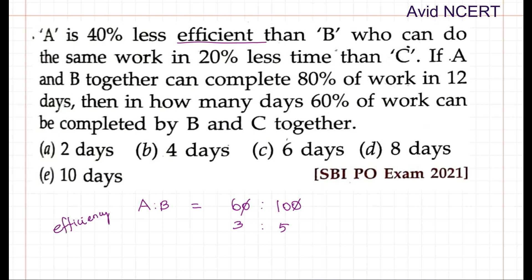From the next point, B can do the same work in 20% less time than C. This is given in terms of time. So if C takes 100, then B would finish it in 80 — that is, 100 minus 20 equals 80. So the time ratio B to C is 80 to 100, which simplifies to 4 to 5.